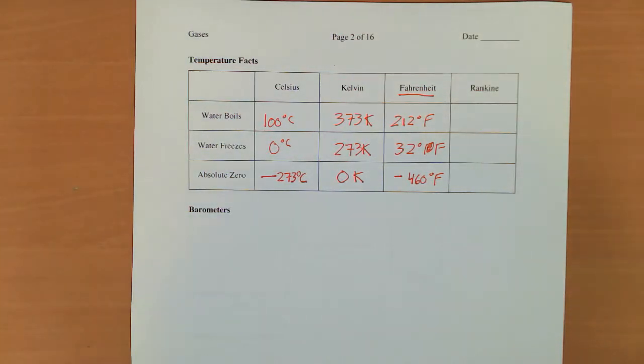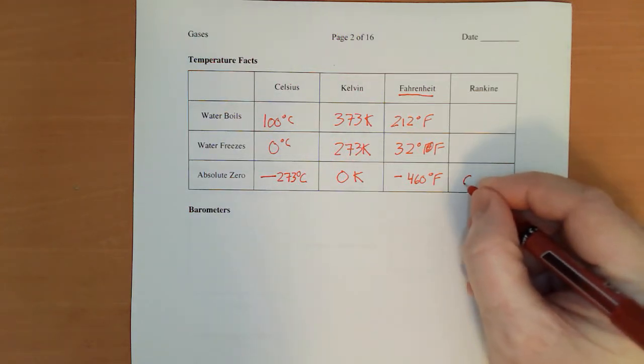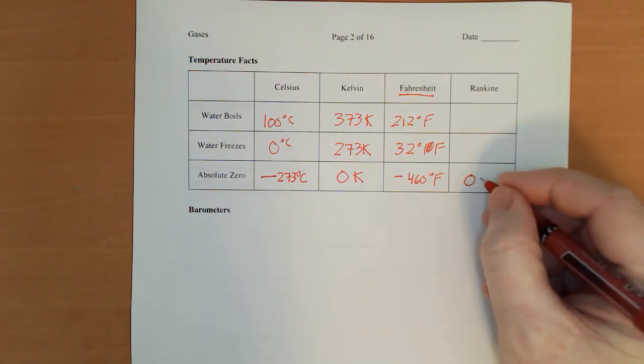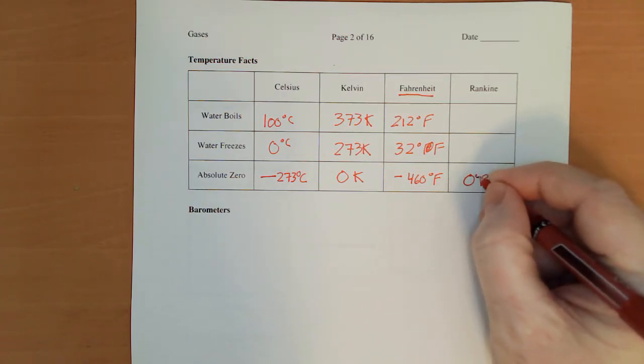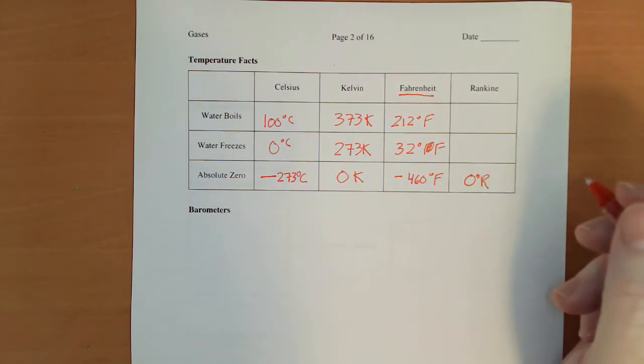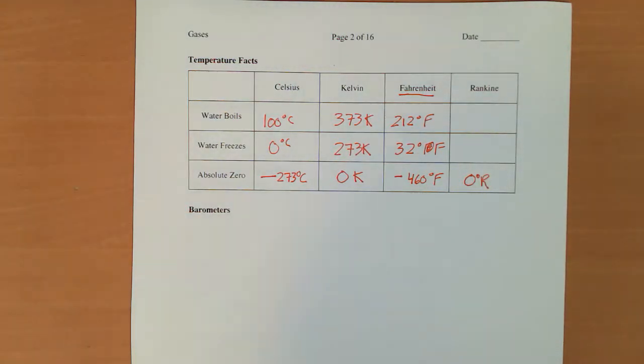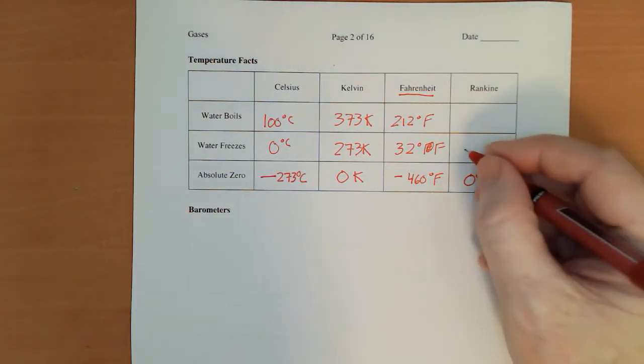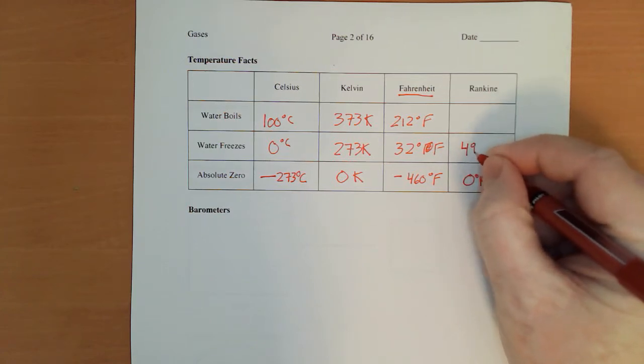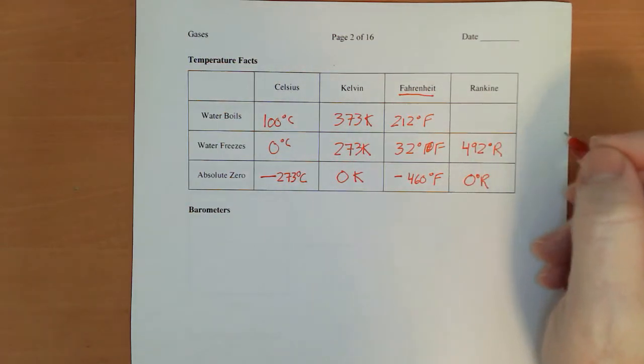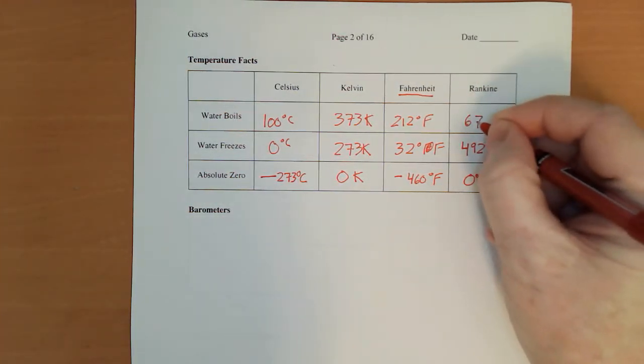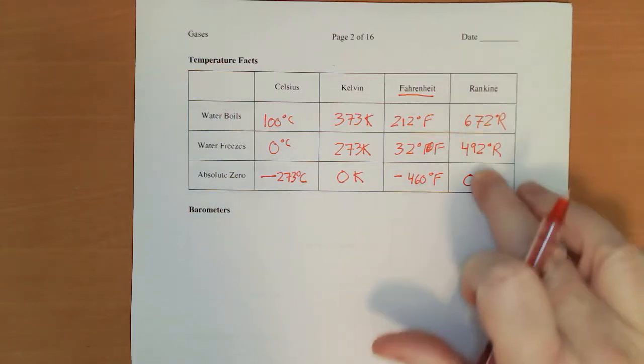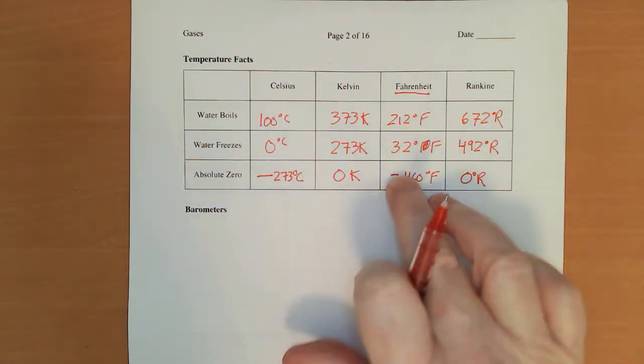Now, using the Fahrenheit degree size, we have a Rankine scale, which is an absolute scale. Zero degrees Rankine. Water would freeze at 492 Rankine. And it would boil at 672. Now, you're never going to encounter this, trust me. You'll never see this, probably, on an AP exam itself, either.